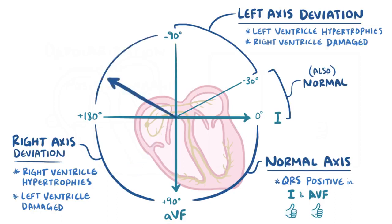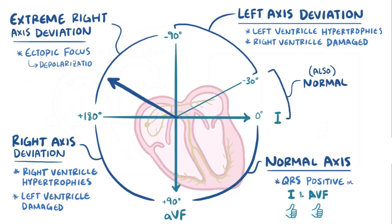Finally, if the vector is negative in both lead 1 and AVF, then that's a super rare case called extreme right-axis deviation, which is between negative 90 and plus 180 degrees. This can sometimes happen when there's an ectopic focus that causes depolarization to start from the bottom of the ventricles and travel in the reverse direction. It's also a good idea in this case to double check that the leads are placed correctly.